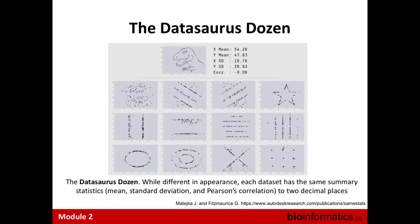A Toronto group also developed the Datasaurus Dozen. They arranged a series of points in the shape of a dinosaur, calculated the x-mean, y-mean, standard deviations, and correlations, then — while conserving those statistics — made a dozen other distributions of those same points, all with the exact same statistics. There's no way you can say all these datasets are the same, which illustrates why we visualize data to detect outliers or anything we'd immediately notice.